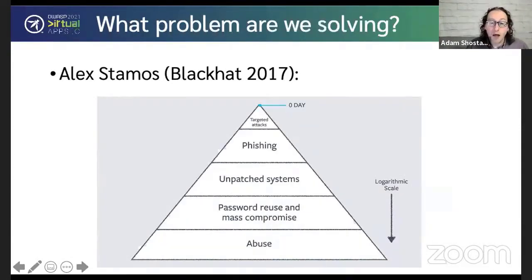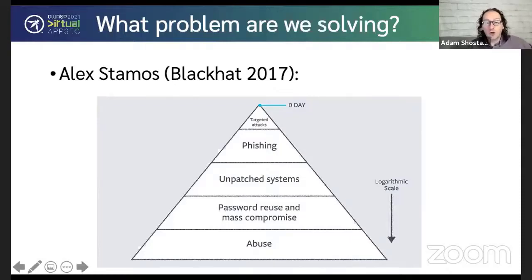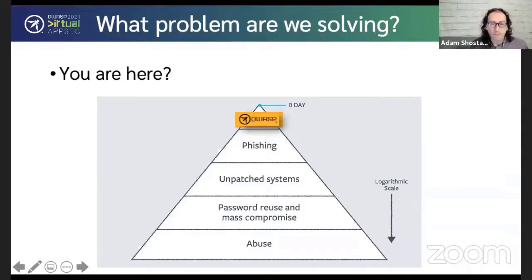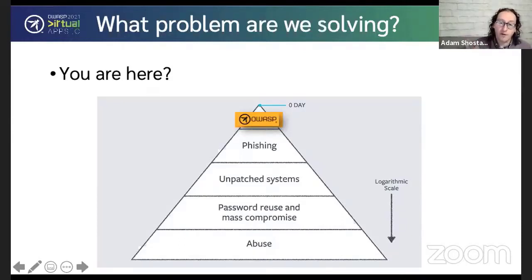In his 2017 Black Hat keynote, Alex Stamos showed a chart and challenged the Black Hat audience, saying Black Hat is all about zero-day — you're up at the very tip of the pyramid — but the things that really hurt people are password reuse attacks and abuse attacks. He asked: what are we going to do about that? So I want to echo his question: is OWASP the right place for us to be for the next 5, 10, 20 years? And if not, how do we expand? I'm not saying we're not doing this — I want to respect the people who are already thinking about it. But I believe it's important for all of us to think about how we expand what our community cares about and ensure we're balancing our efforts in the most effective ways.